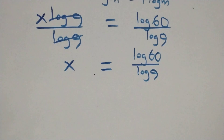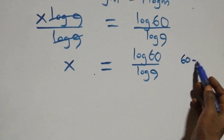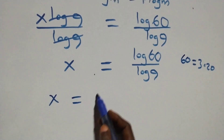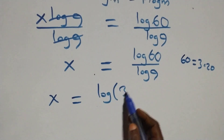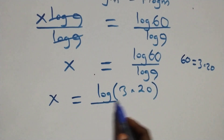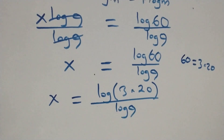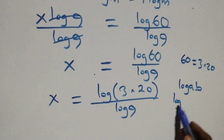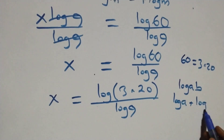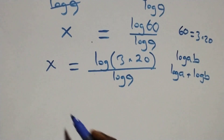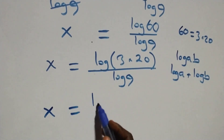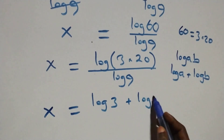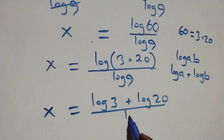Now, 60 is the same as 3 times 20. So all we have becomes x equals log(3 times 20) over log 9. Using the logarithm product rule — log(a·b) equals log a plus log b — all we have becomes x equals log 3 plus log 20, all over log 9.